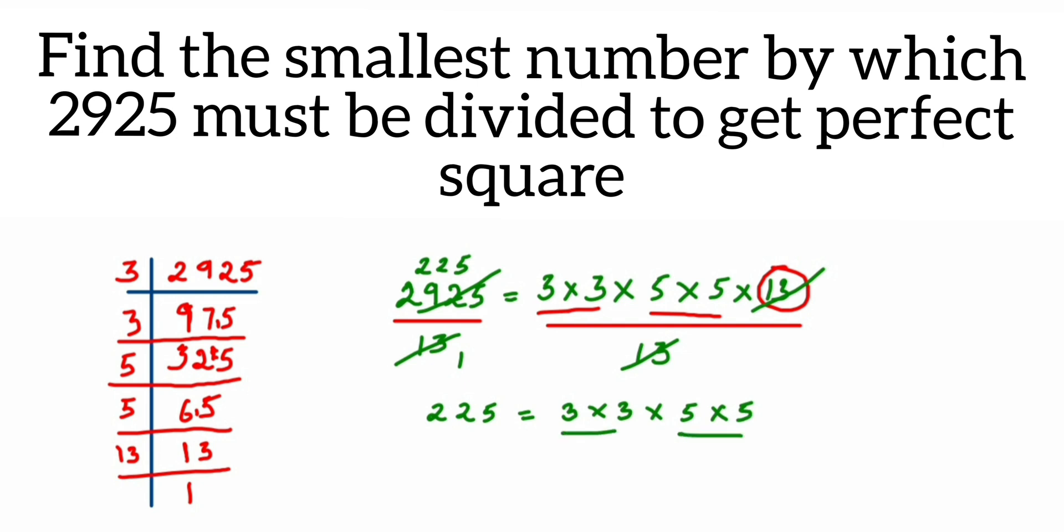Now the square root of 225 will be nothing but from each pair you take one factor. I guess you would have learned how to find out the square root by prime factorization method. So this is how you can do it.